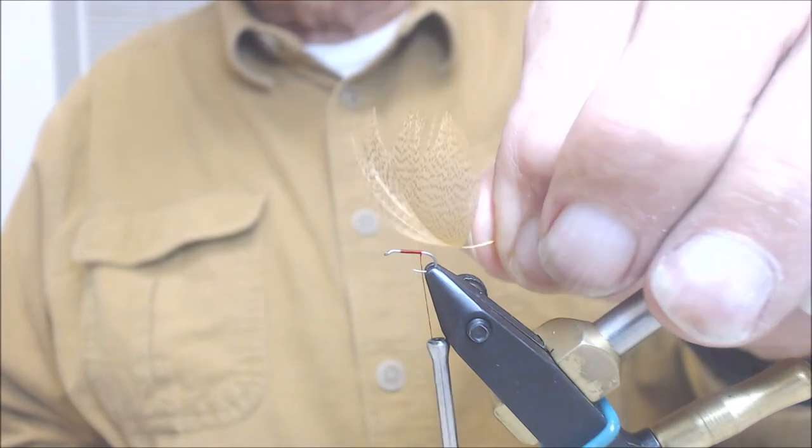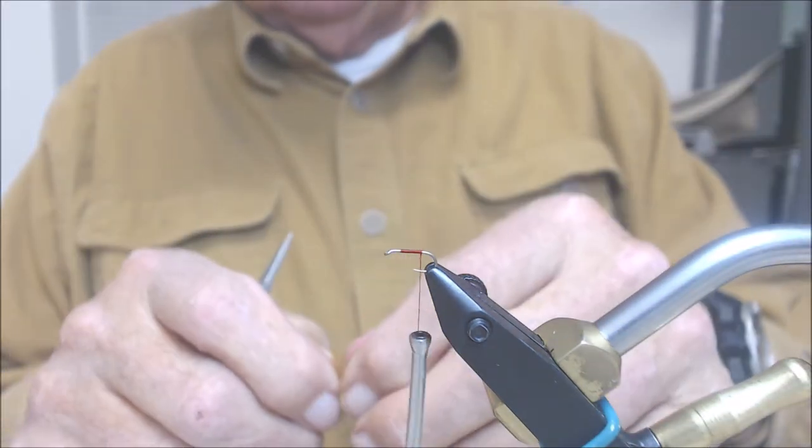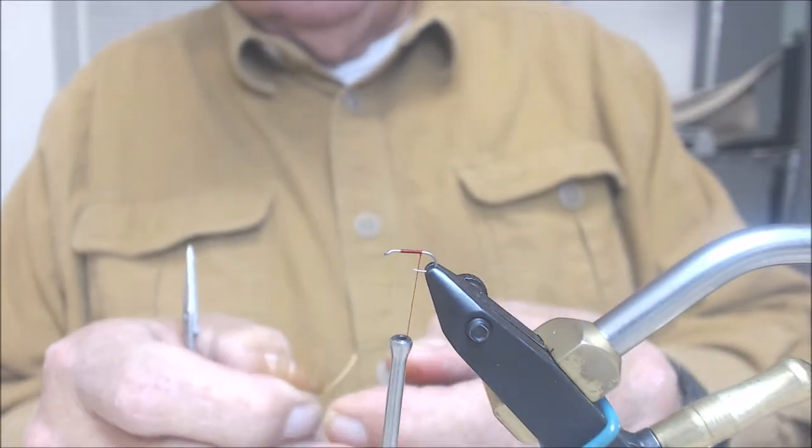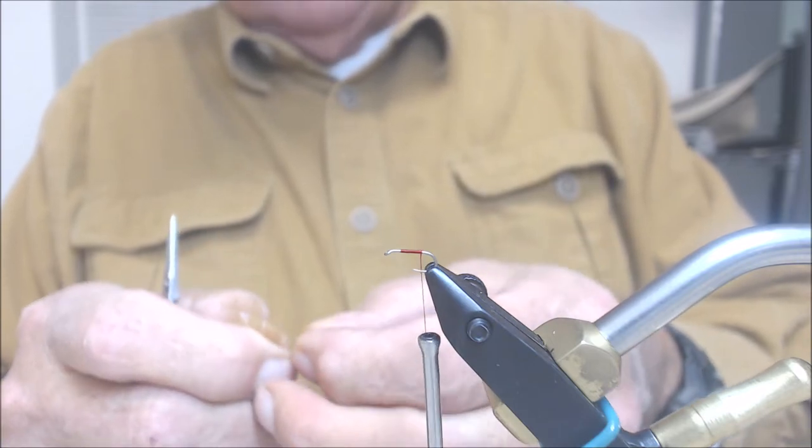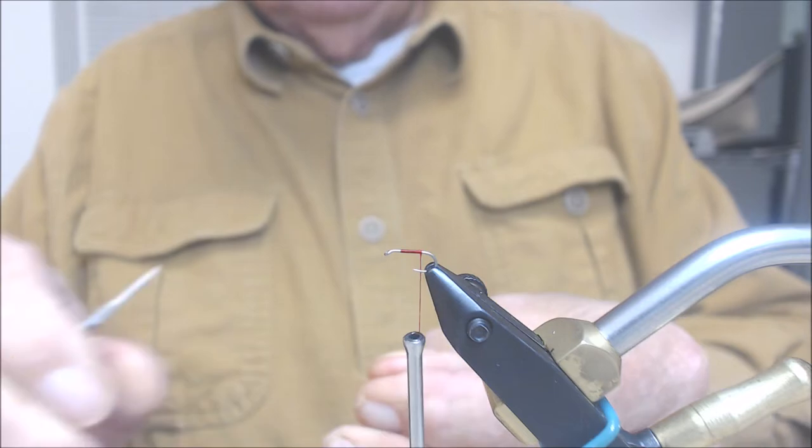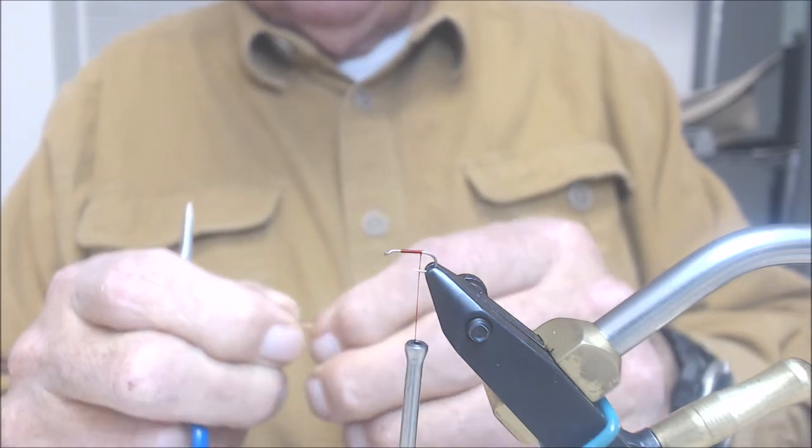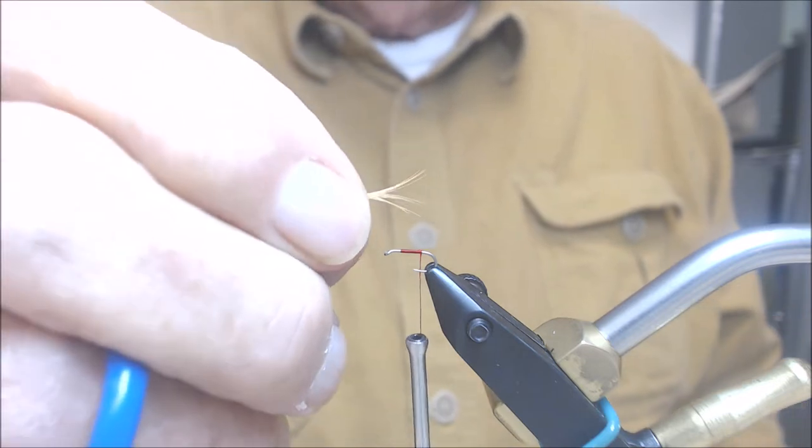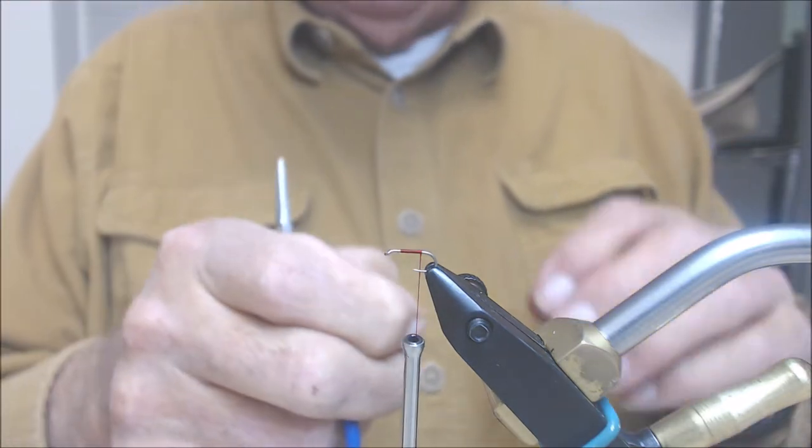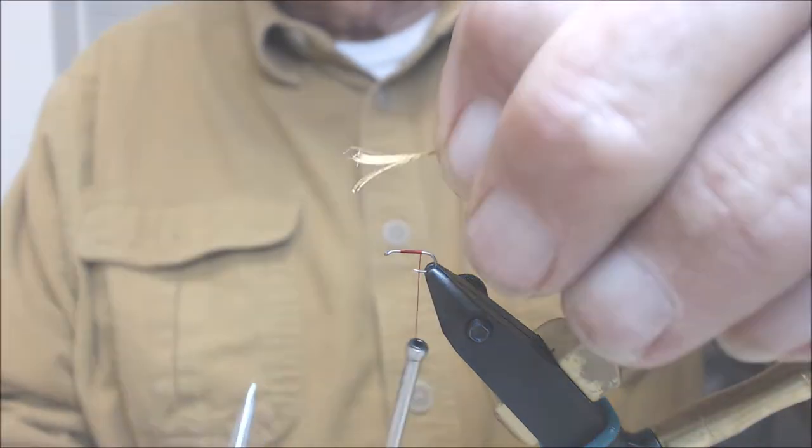For the trailing shuck, we're going to use a wood duck feather. I'm going to grab maybe 5-eighths to a quarter of an inch fibers, and we're going to make it about the length of the shank, maybe just a little bit shorter than the length of the shank.